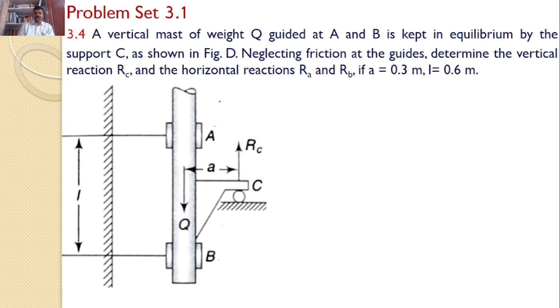Now, here A and B are the guides which permit only the vertical motion and there is no horizontal motion. Horizontal reactions will develop at A and B, Ra and Rb. At C, only horizontal movement will be permitted but there is no vertical motion. Hence, vertical reaction will develop, Rc.